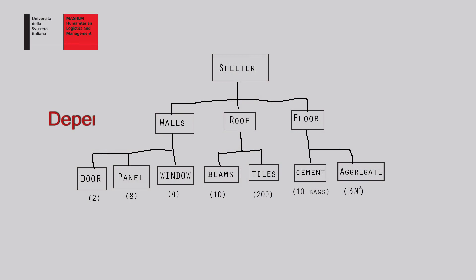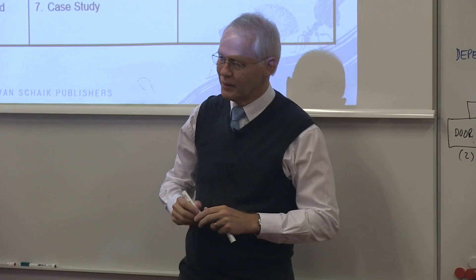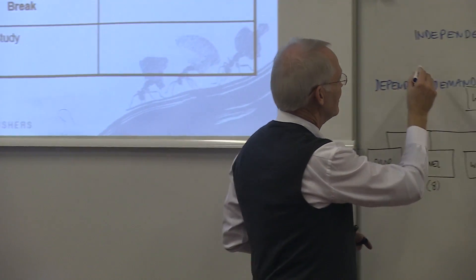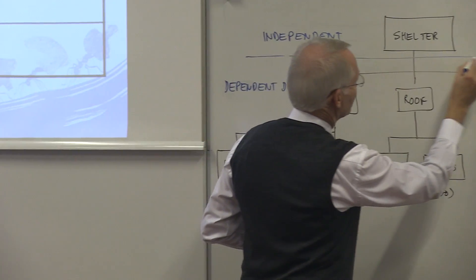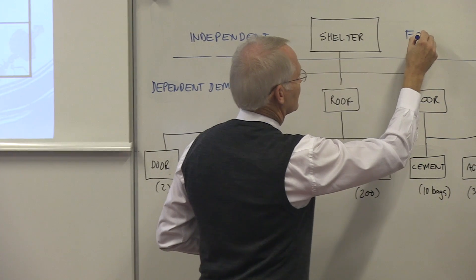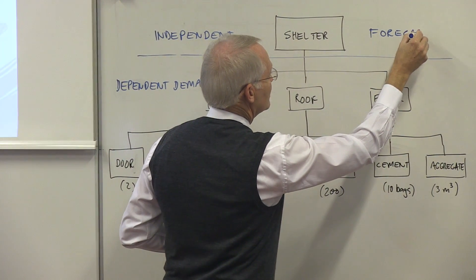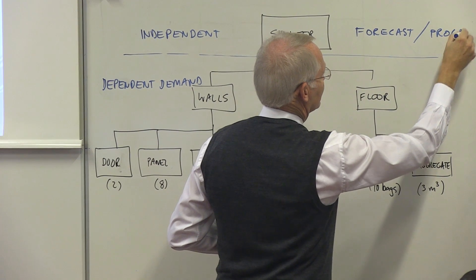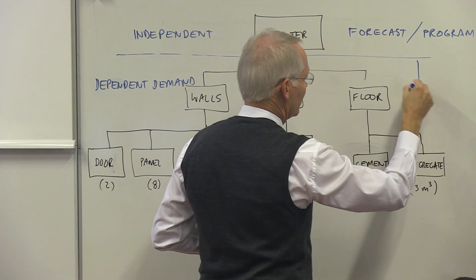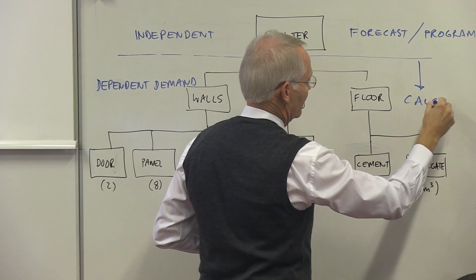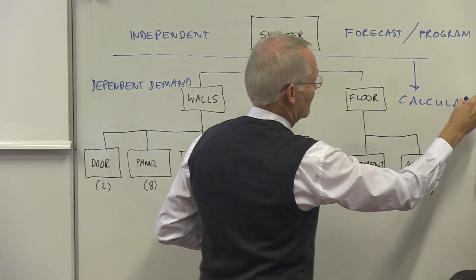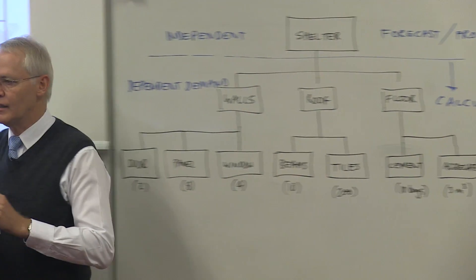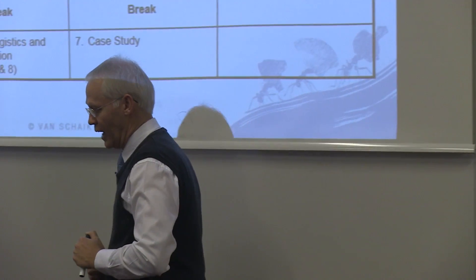And that one we forecast how many do we need, or it was based on a program of certain need. Everything below that is calculated into how much do I need of these components, and we call that dependent demand.